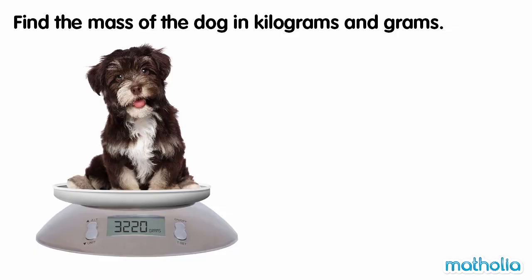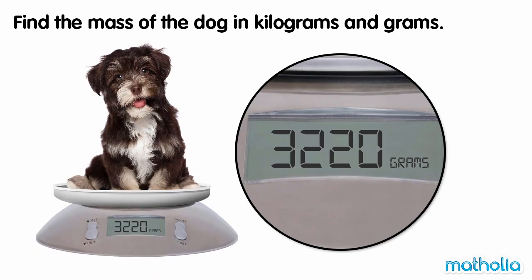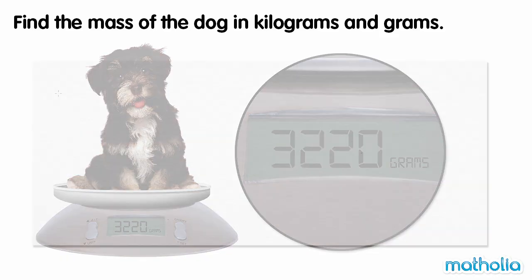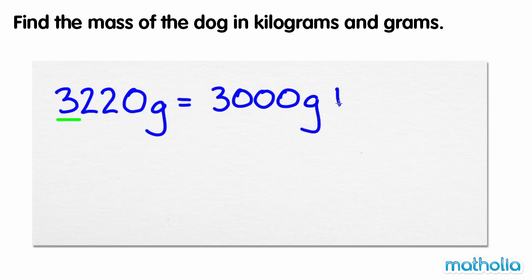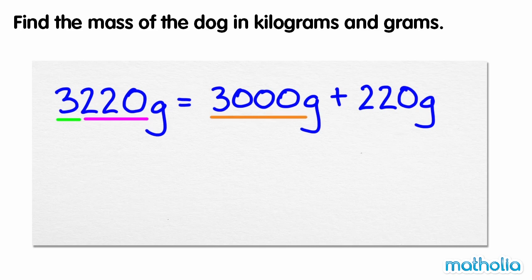Find the mass of the dog in kilograms and grams. The dog has a mass of 3,220 grams. We can rewrite 3,220 grams as 3,000 grams plus 220 grams. We know that 1,000 grams is equal to 1 kilogram, so 3,000 grams is equal to 3 kilograms.